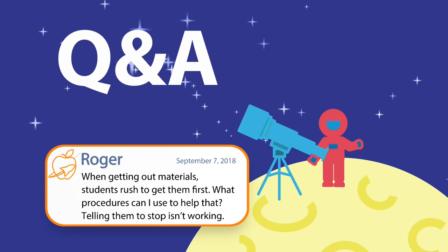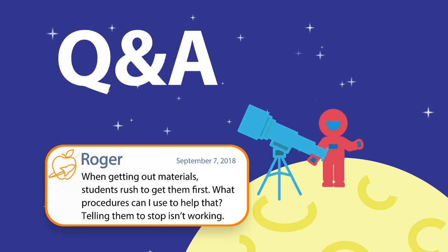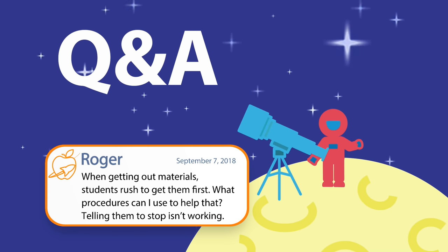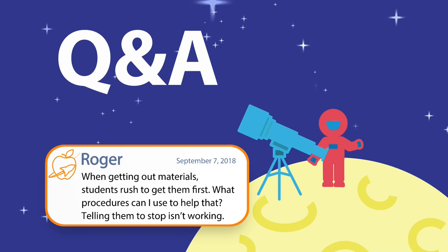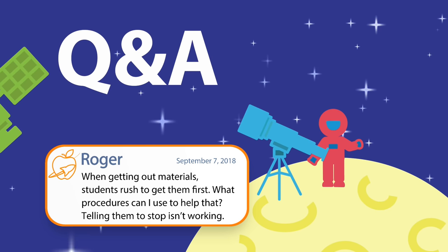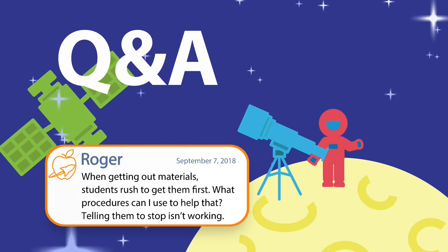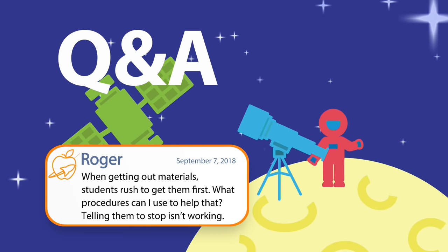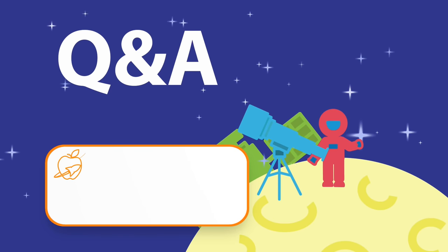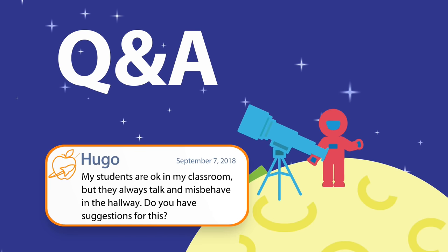Roger asks: 'When getting out materials, students rush to get them first. What procedures can I use? Telling them to stop isn't working.' I would suggest creating a jobs or duties board and rotating which students are assigned to specific duties each week. Get two or three students — however many you need — and make it their job that week to collect and hand out materials. It'll be a lot more organized and a lot less chaotic in your class.